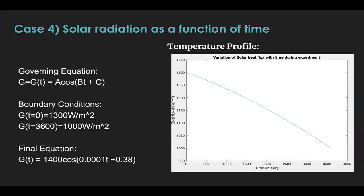So in the final equation, we have G of T equal to 1400 cos of 0.0001T plus 0.38. The leading coefficient here is taken to be 1400. The reason is 1400 is the maximum intensity value that was observed during the day around noon time. But our experiment time was from 2 p.m. to 3 p.m. So it accounts for that.